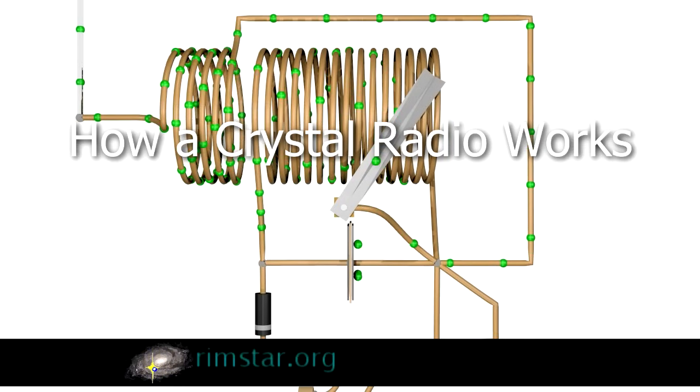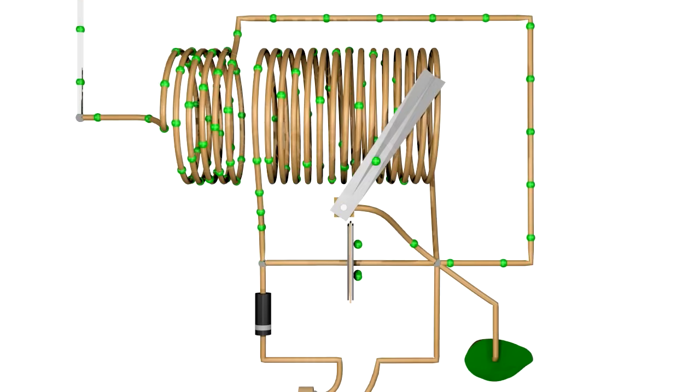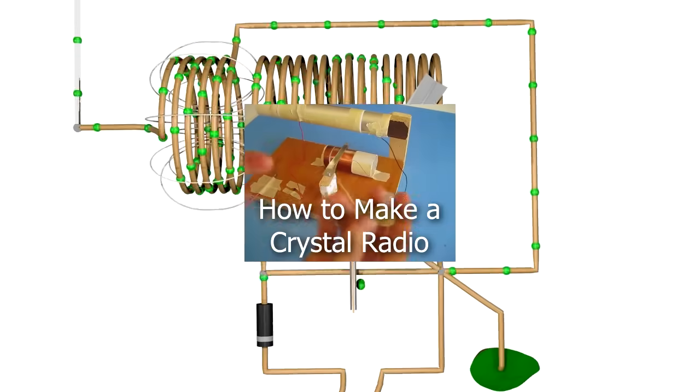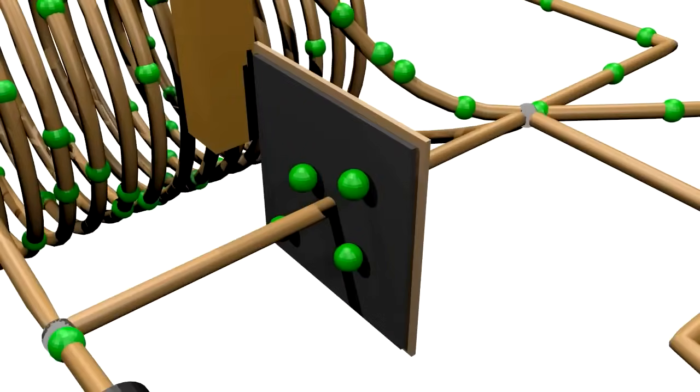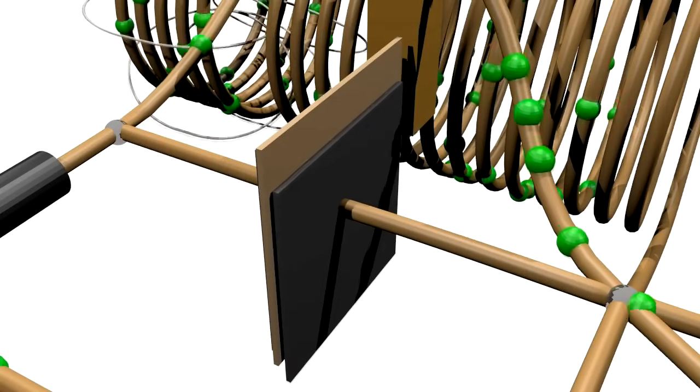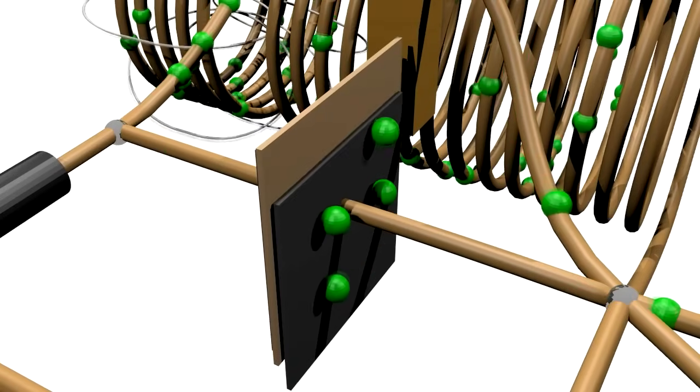Hi folks. I'm going to explain how a crystal radio works. As usual I'll do it at the low level of the electrons in the wires. The crystal radio I'll use is the one in my how to make a crystal radio video. I'll start first with a quick description of the crystal radio parts in action as electrons move through them. After that I'll explain more detail about what the parts do, why they're there.